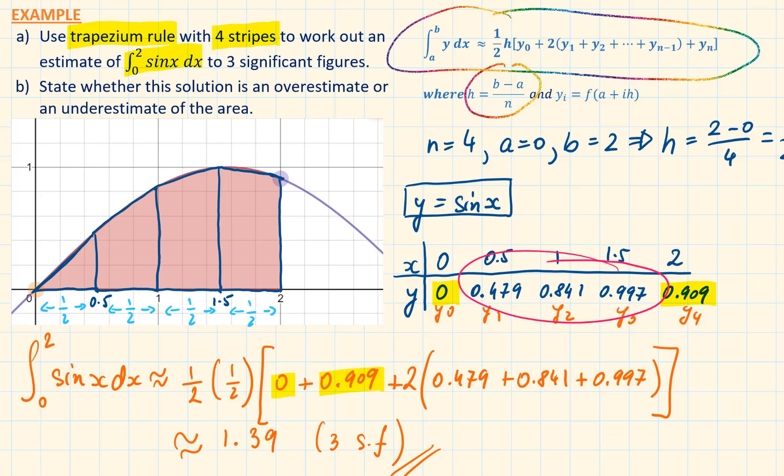When calculating the y values, those are not final answers, I have rounded them to 3 significant figures. Ideally, I should have given these answers to more significant figures and only rounded the final answer to 3 significant figures. Is this an overestimate or an underestimate?